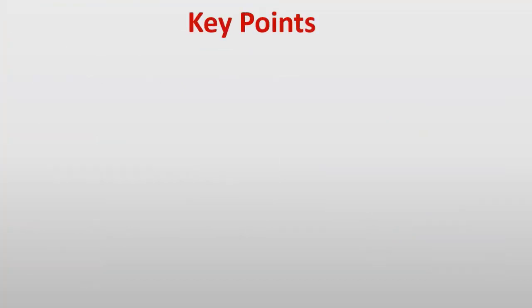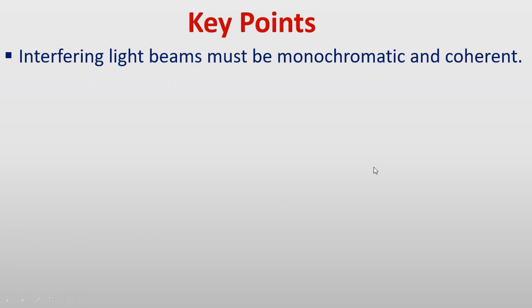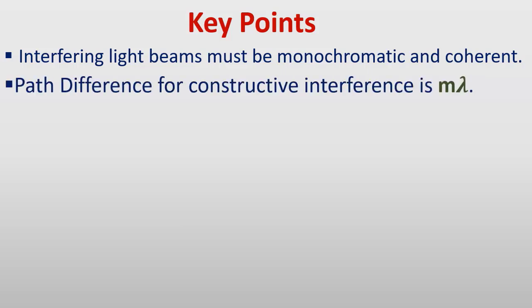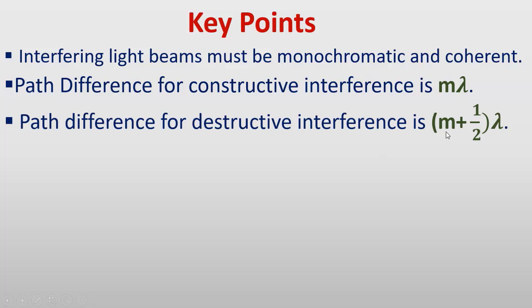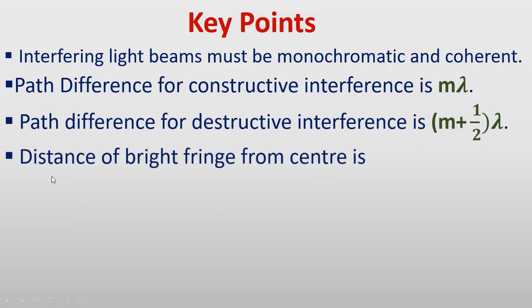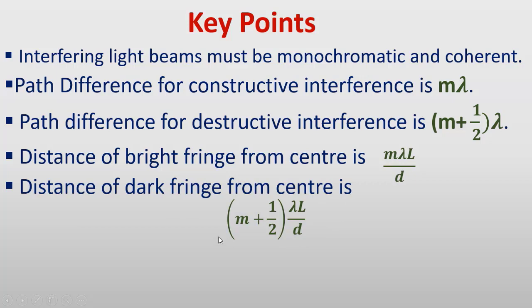Ab hum key points dekhte hain. Interfering light beams must be monochromatic (single wavelength) and coherent (constant or zero phase difference). Path difference for constructive interference is mλ — that is, integral multiple of full wavelength. Path difference for destructive interference is (m + ½)λ — that is, odd integral multiple of half wavelength. Distance of bright fringe from center is mλL/d. Distance of dark fringe from center is (m + ½)λL/d. Fringe spacing is λL/d — distance between two consecutive bright or dark fringes.